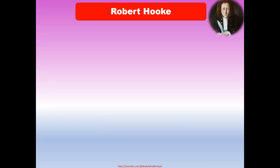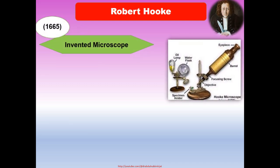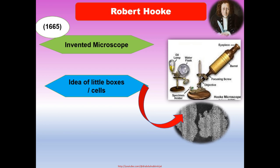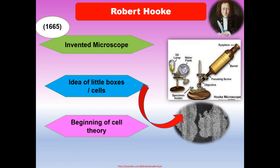Whenever we discuss the history of microbiology, we first look at the discovery of the cell. The first name in cell theory is Robert Hooke, who invented the microscope. Robert Hooke was an Englishman who, after observing a thin slice of cork, reported that life's smallest structural units were little boxes or cells. Hooke's discovery marked the beginning of the cell theory — the theory that all living things are composed of cells.